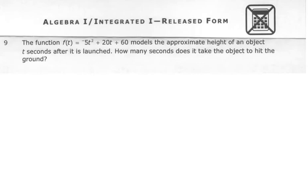Number 9. The function f of t equals negative 5t squared plus 20t plus 60 models the approximate height of an object t seconds after it is launched. How many seconds does it take the object to hit the ground? So we're looking for time, and we want to know when it hits the ground.